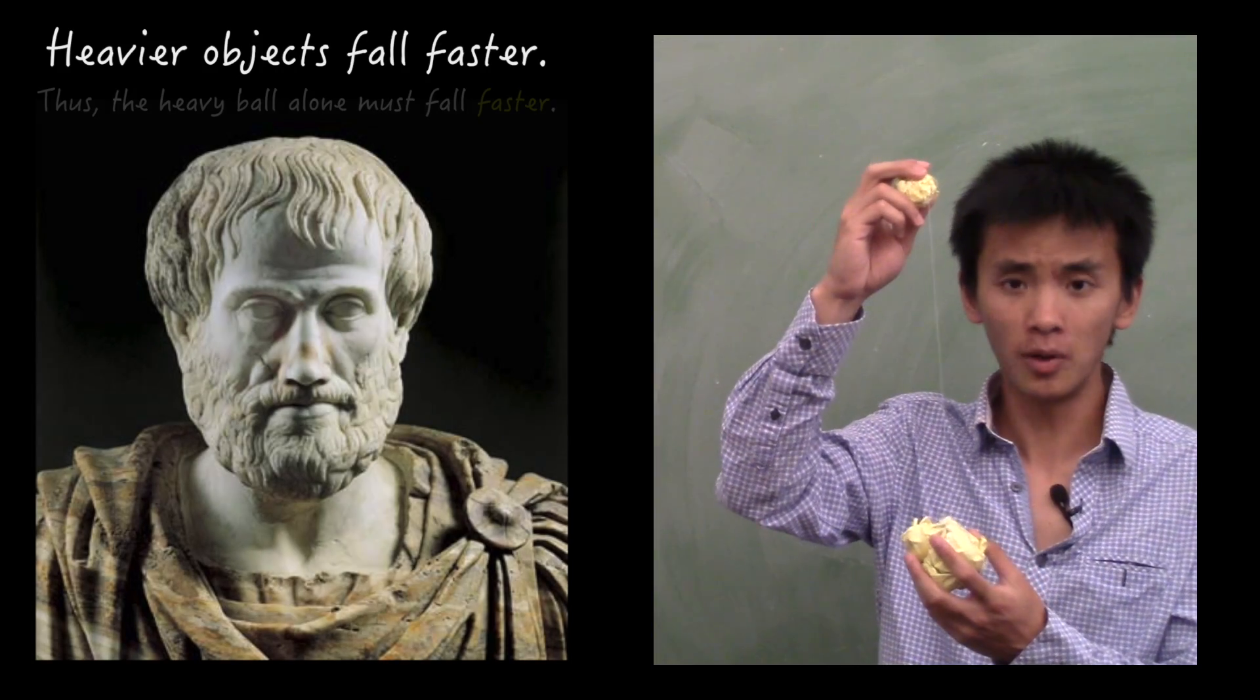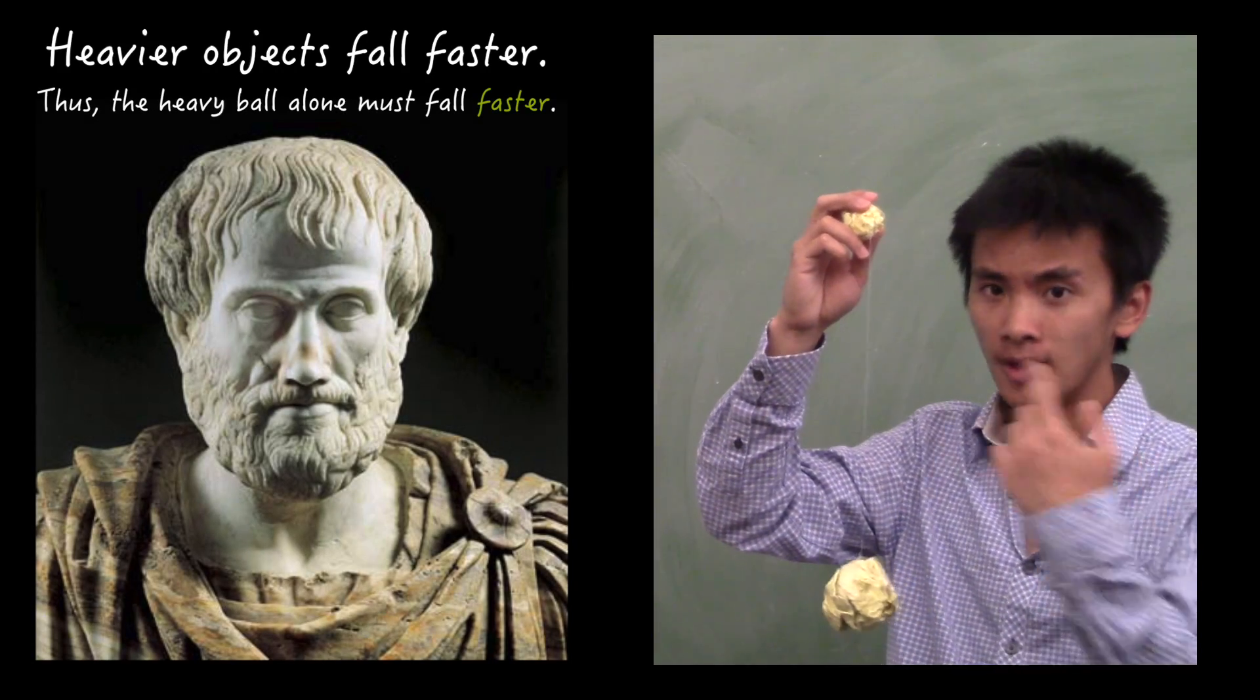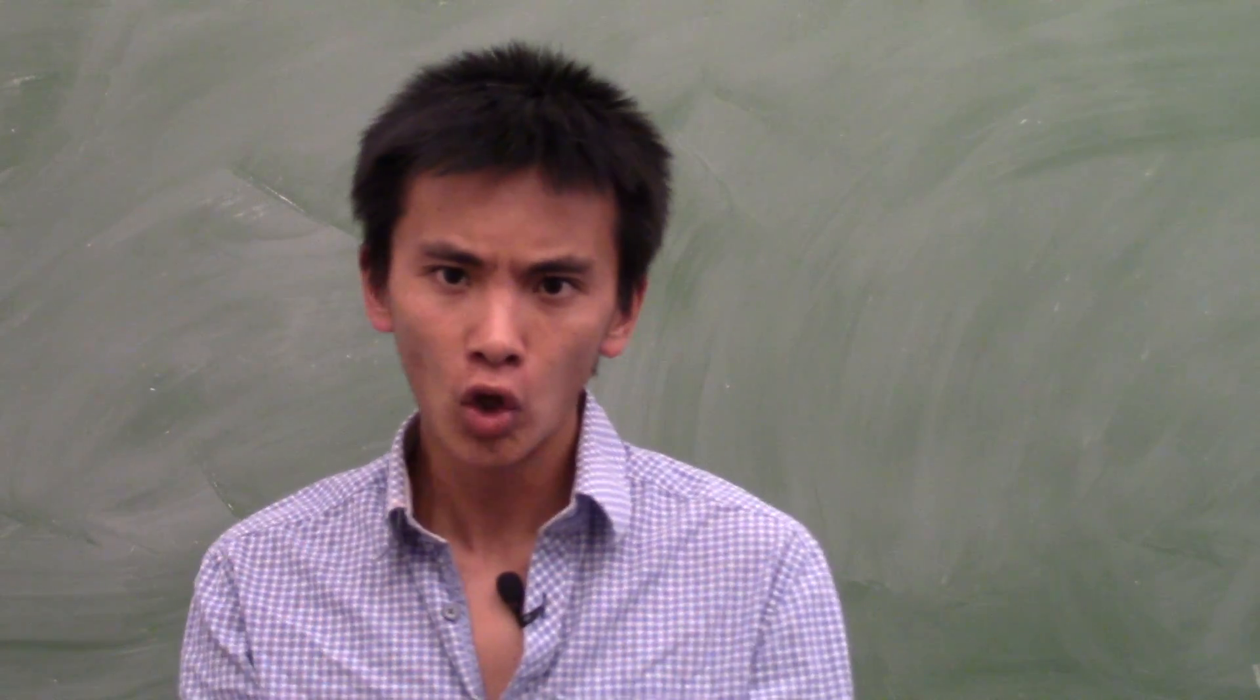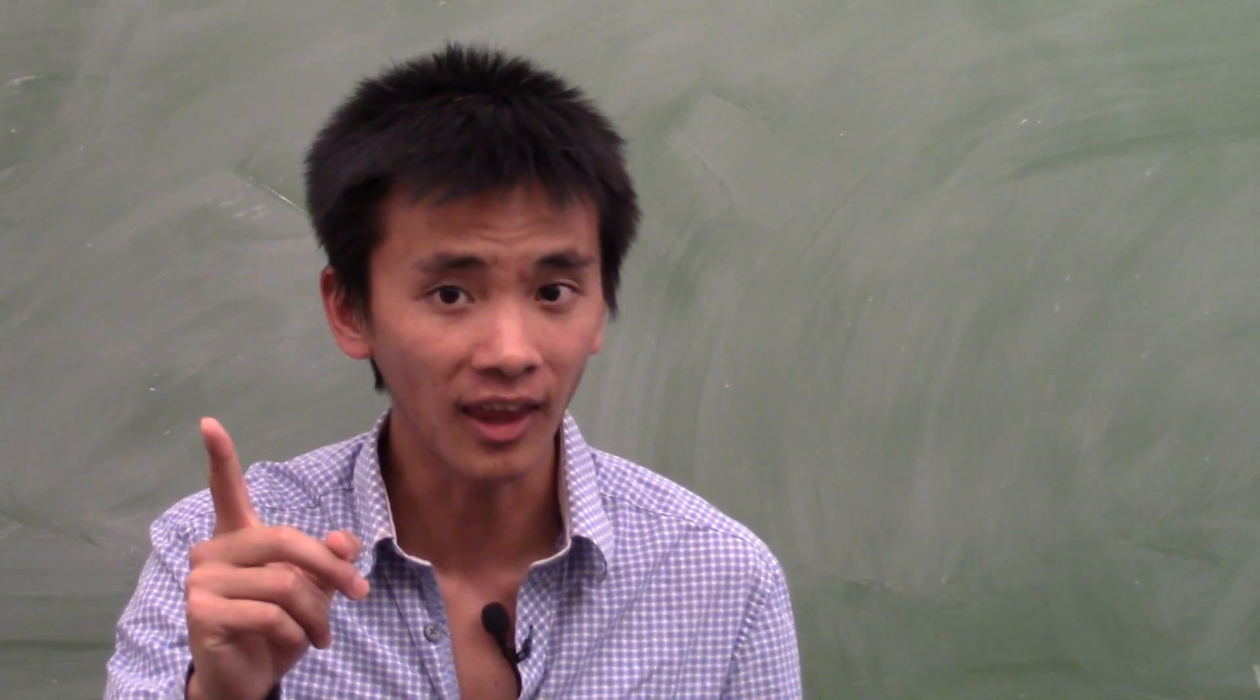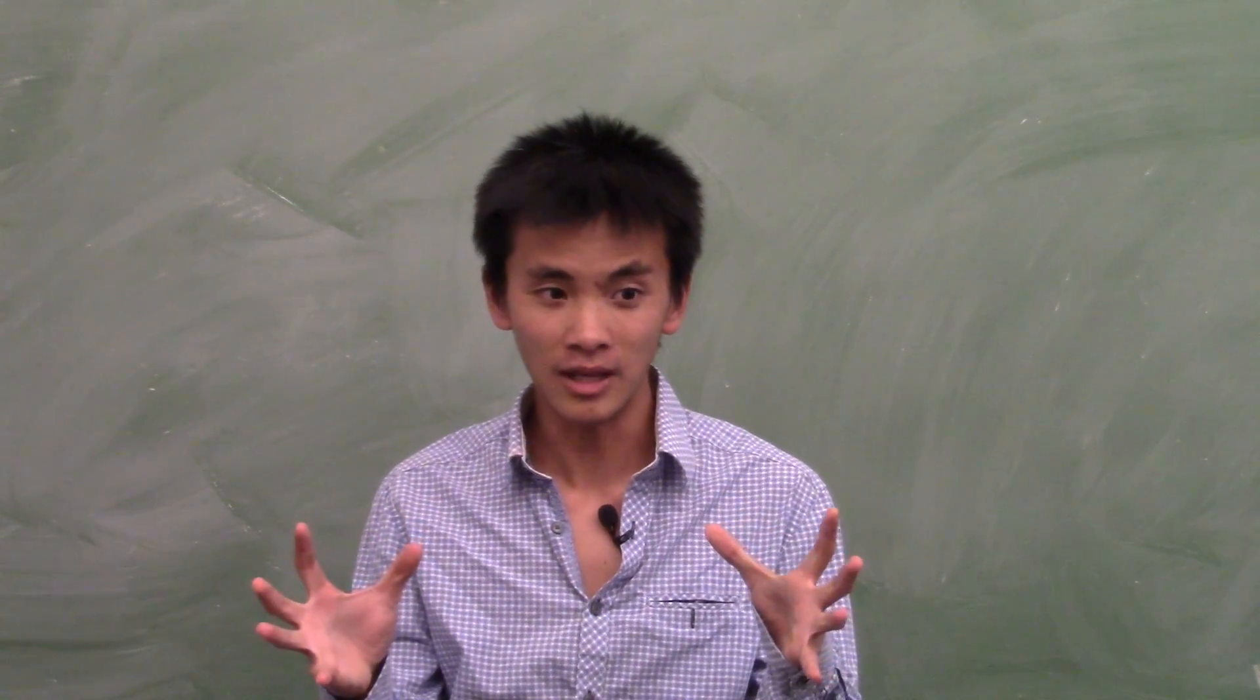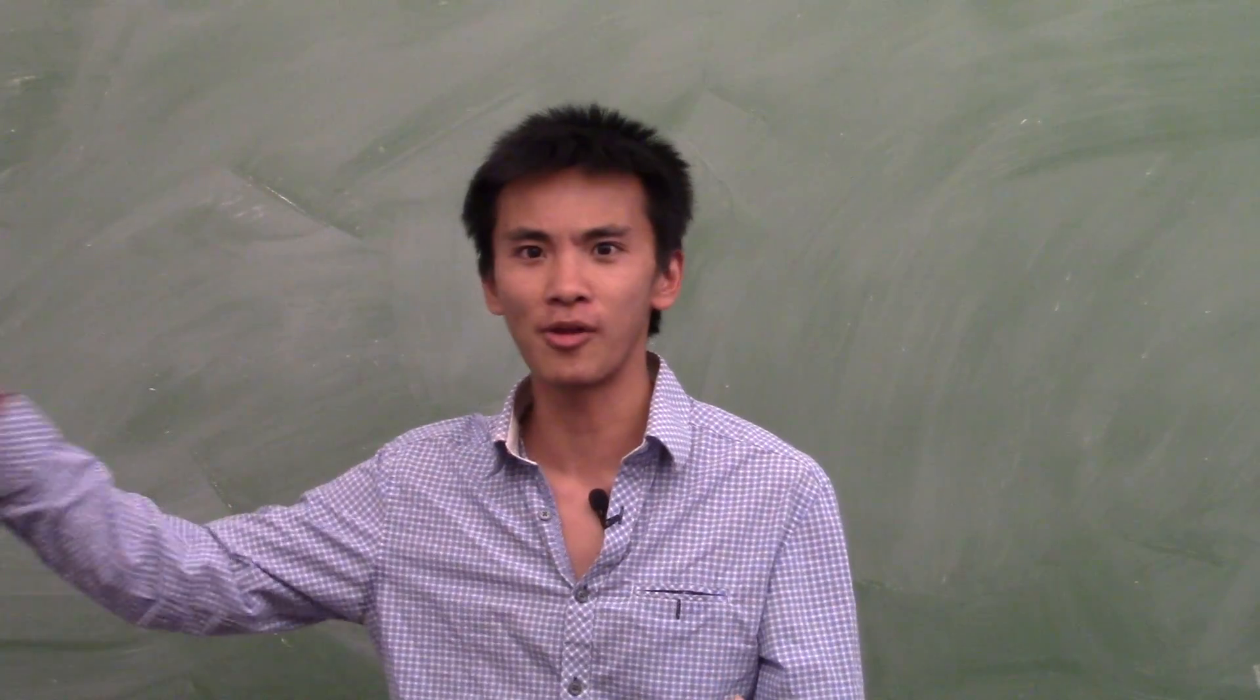But at the same time, you should conclude the exact opposite. Namely that this system, the light ball plus the heavy ball, should fall slower than the heavy ball alone. So applying Aristotle's principle, you must conclude both one thing and its exact opposite. Aristotle's principle is fundamentally flawed. It is contradicted, not by any other theory, but by itself.